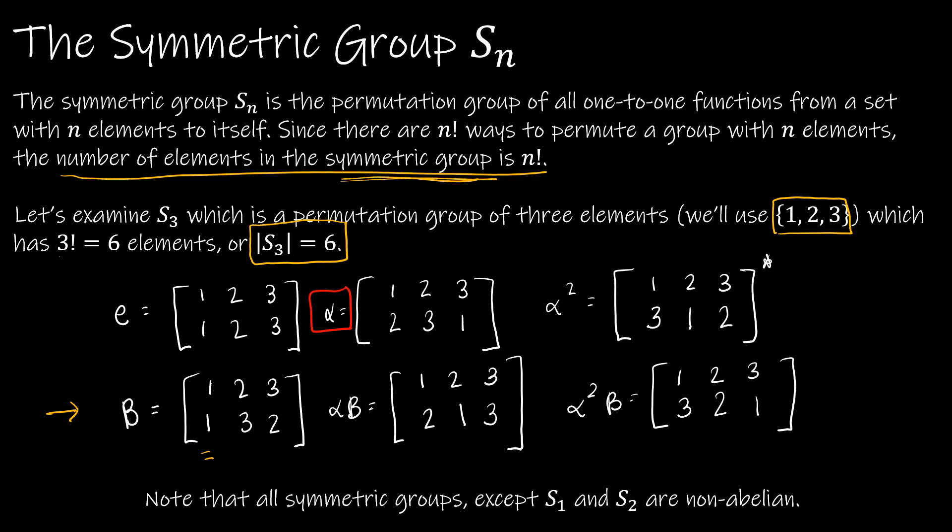I also want to point out that all symmetric groups except S1 and S2 are non-abelian, which means you cannot commute — you can't change the order of composition without changing the outcome. We're going to finish up chapter five with the properties of permutations.